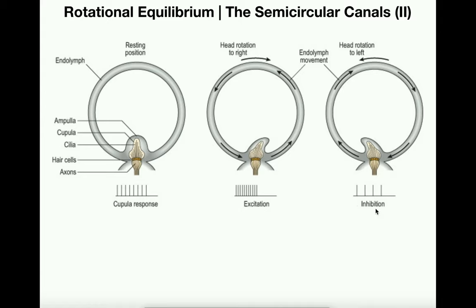Most likely in an anatomy course you won't have to know which one is excitation or inhibition, but the important thing is that depending on which direction the cupula is moved, you either have a faster firing rate or a slower firing rate. And that's pretty much the function of all three semicircular canals.